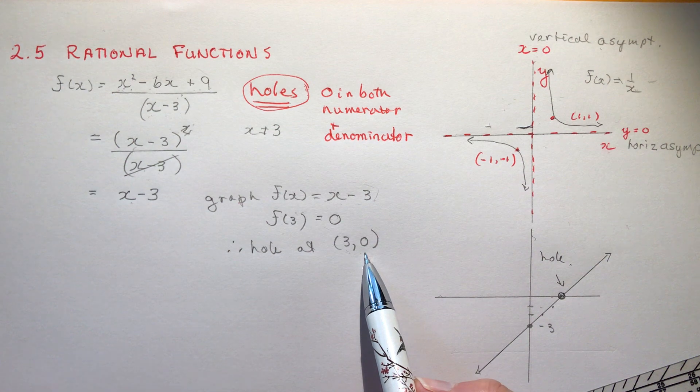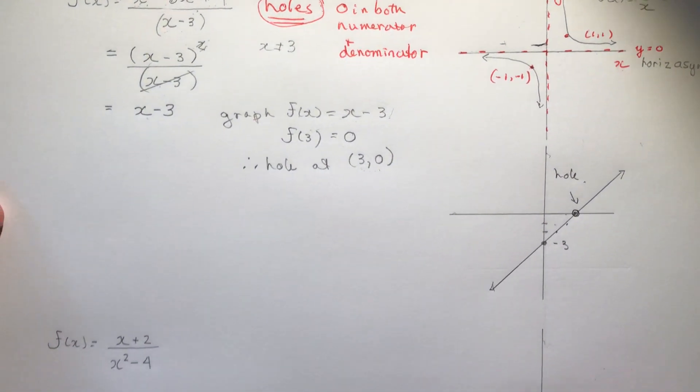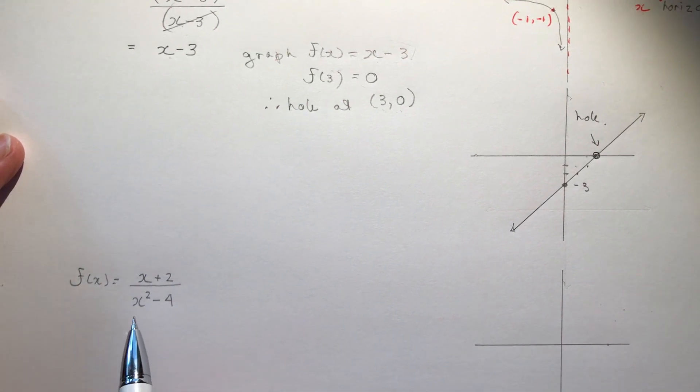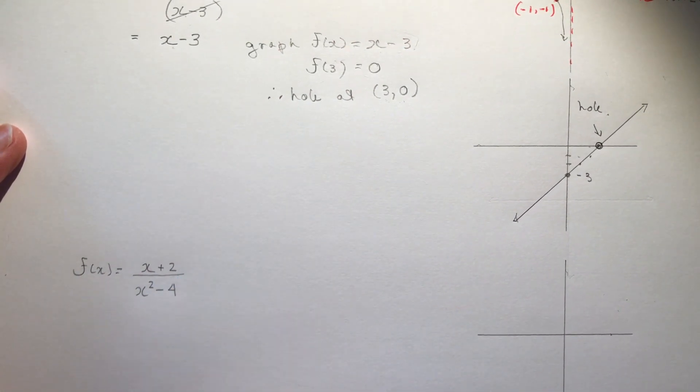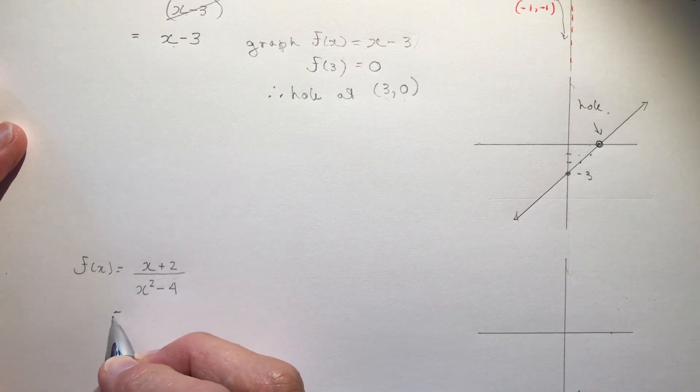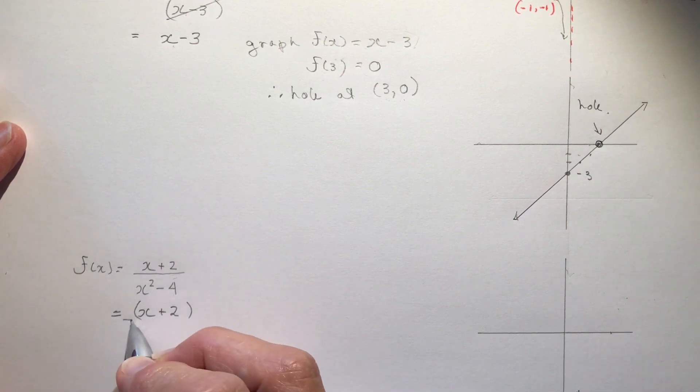Because this function had the restriction that x could not be 3 and you need to figure out what would the height of that function be when x is 3 and I plug that into this equation to get the height. Okay so the other thing that can happen with rational functions when you're simplifying them is something like this.